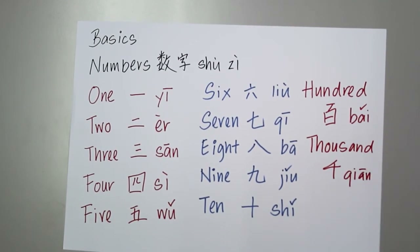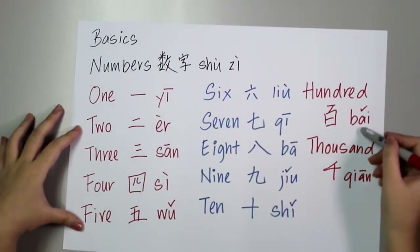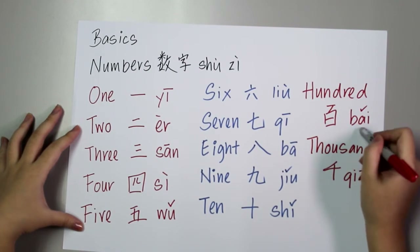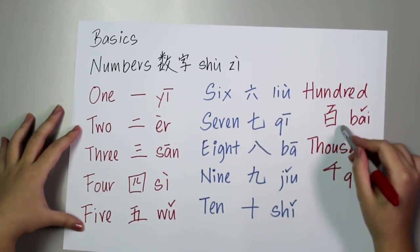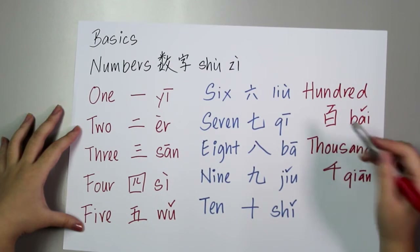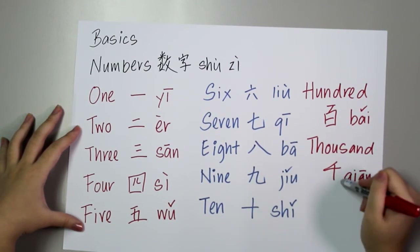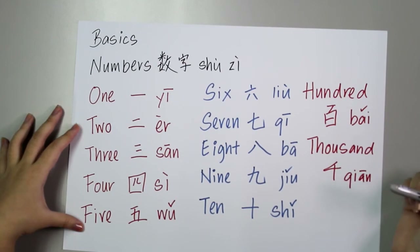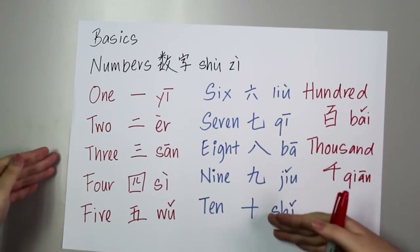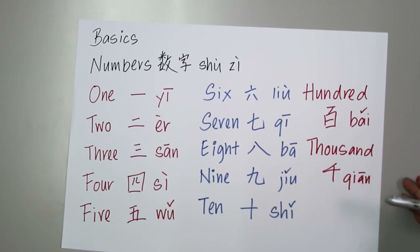So if you want to say six hundred, it is liu bai. For nine thousand, it is jiu qian. It's pretty easy — you just need to know the basics and you can match it with whatever numbers you want.